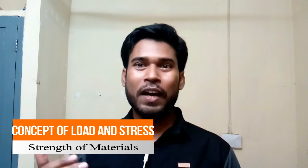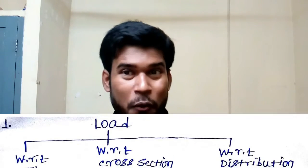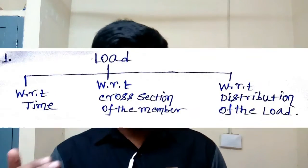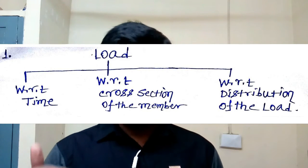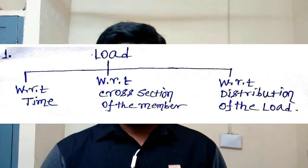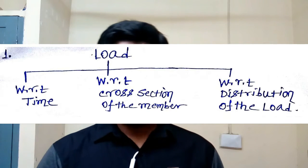Now how can we distinguish load? Load can be differentiated into three different criteria: the first is with respect to time, the second is with respect to the cross section of the member, and the third is with respect to the distribution of the load. If we go by the time criterion, we can differentiate load into two categories: static loading and dynamic loading.